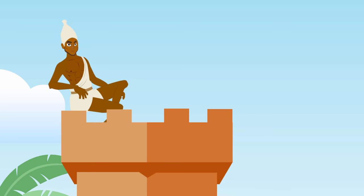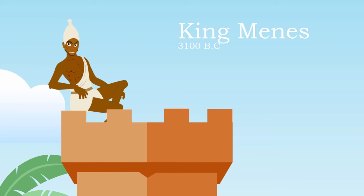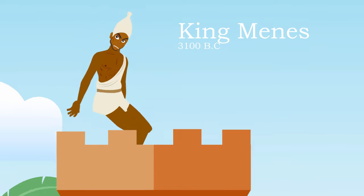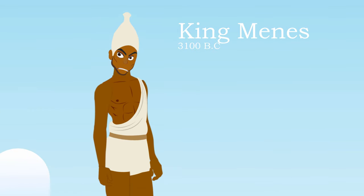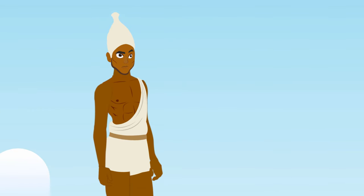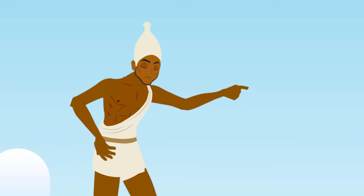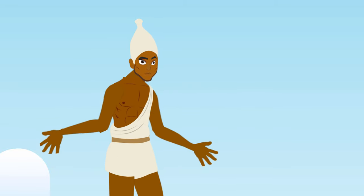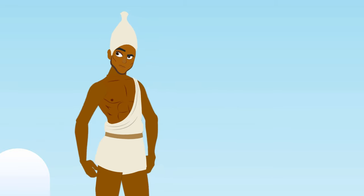This continued until around 3100 BC, when Upper Egypt became powerful and wealthy. The king of Upper Egypt at that time, Menes, personally brought troops to defeat Lower Egypt.